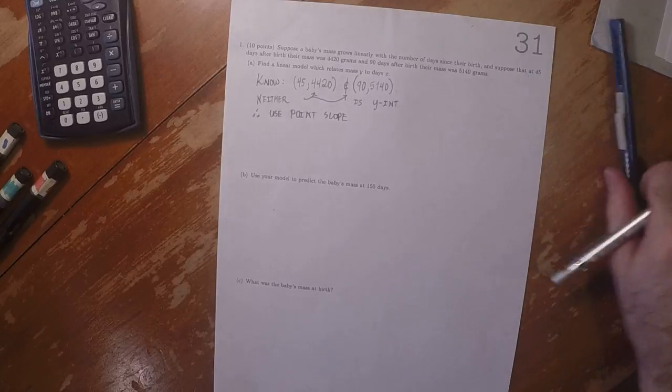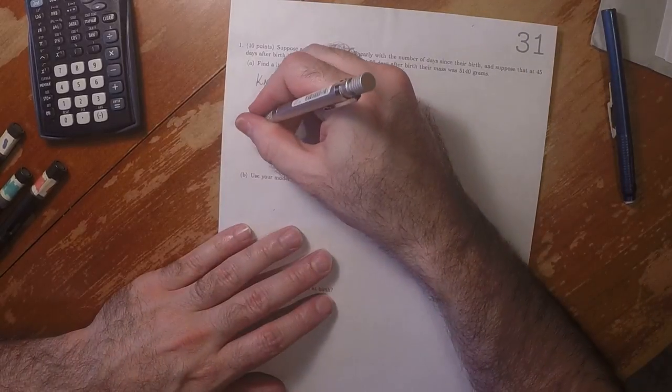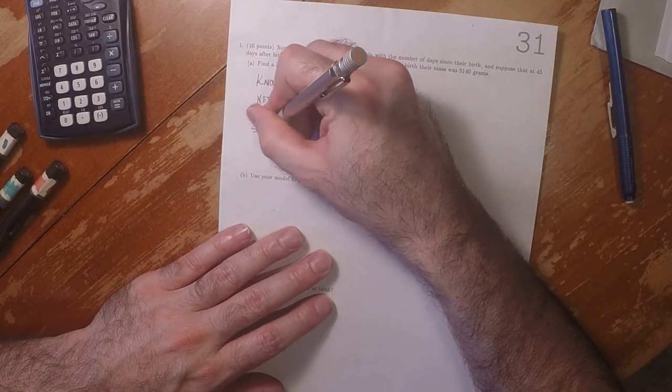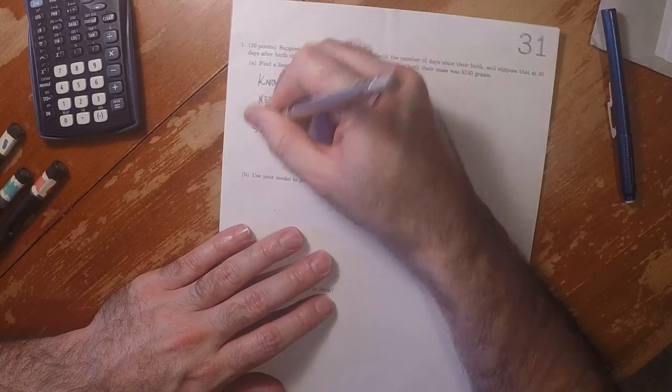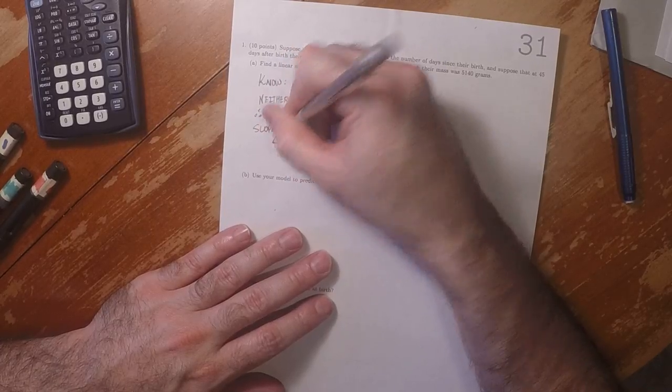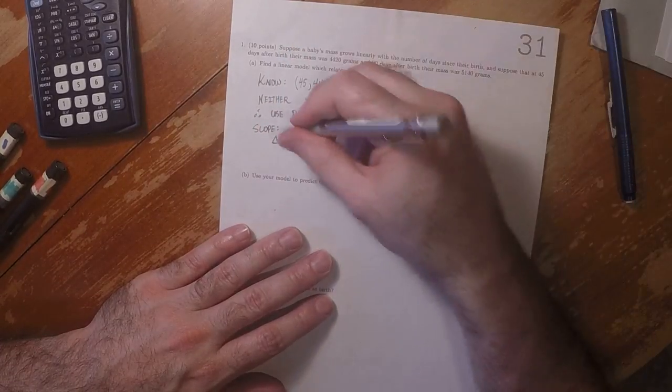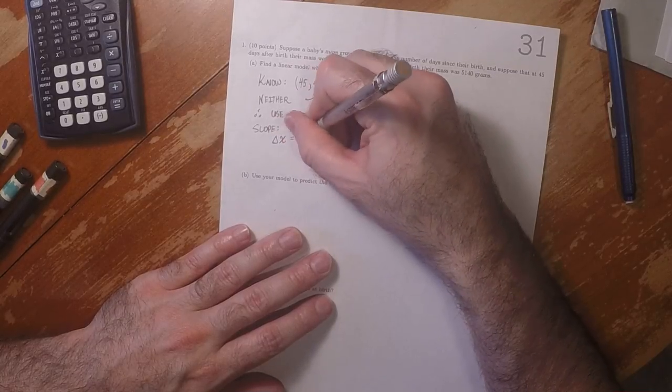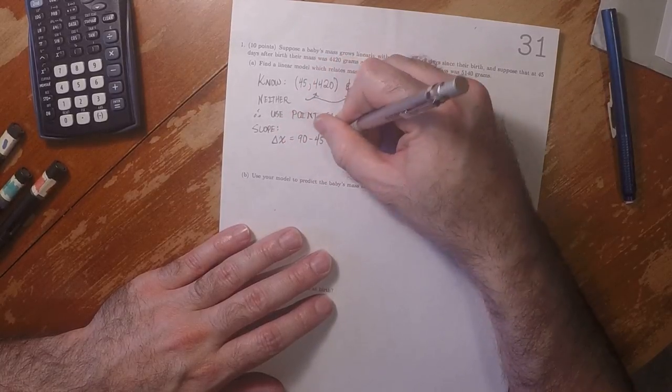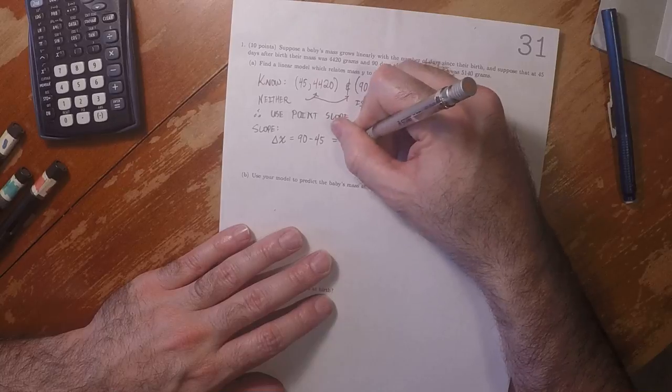Which means that we'll need to know the slope. So the change in x, that's 90 minus 45, which is 45.